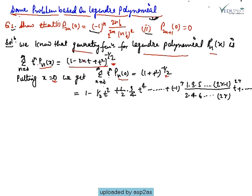Using the binomial expansion of (1 + T²)^(-1/2), we get: 1 - (1/2)T² + (1·3/4)T^4 - ... + (-1)^r * (1·3·5···(2r-1)) / (2·4·6···2r) * T^(2r) + ... This follows from the expansion of (1+x)^(-n).